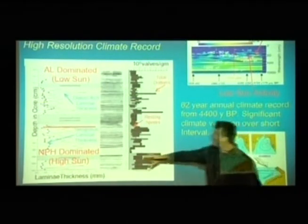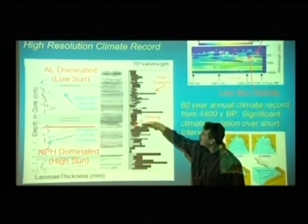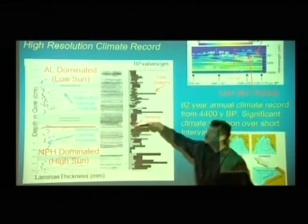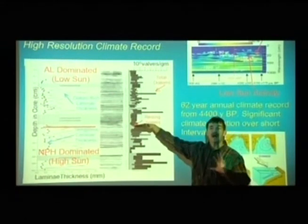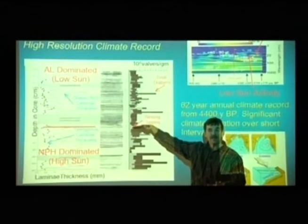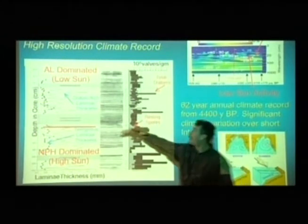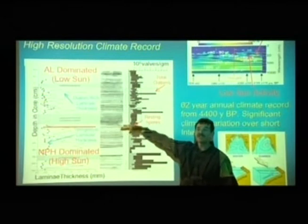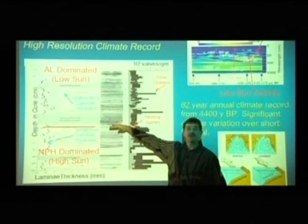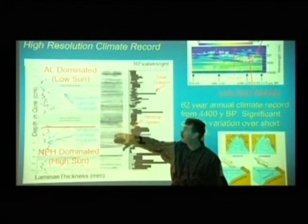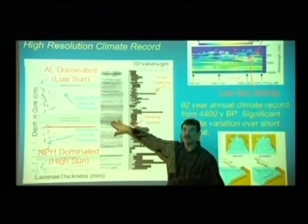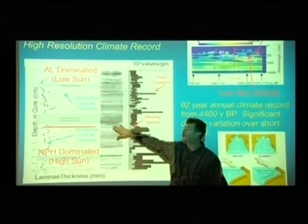This is the high sun interval right up here when that sort of light area right here. But look at this record right at this point right here. Suddenly we move from a high sun part of a Gleisberg cycle to a low sun one. And almost over the point of one season, we change to a different climate regime here.